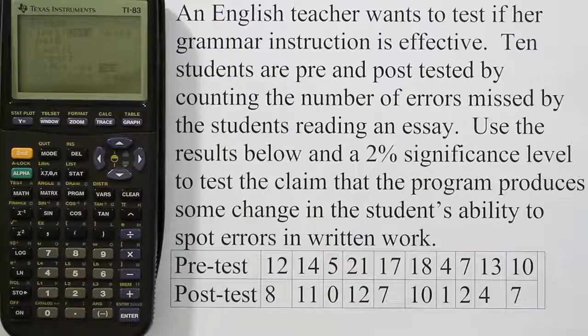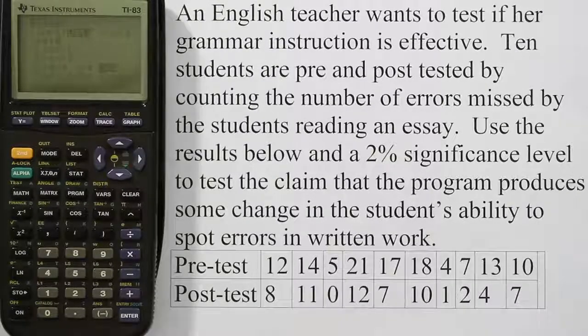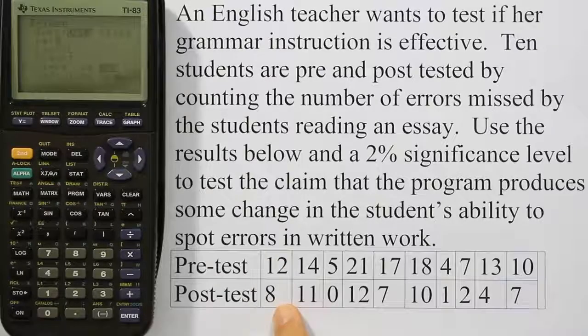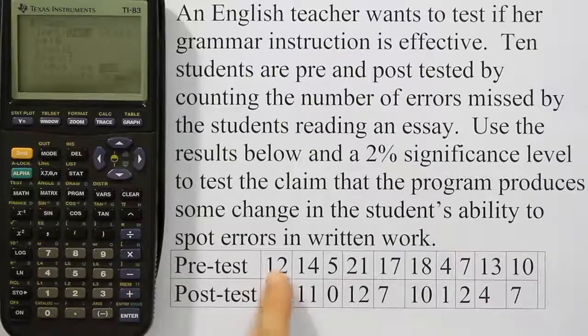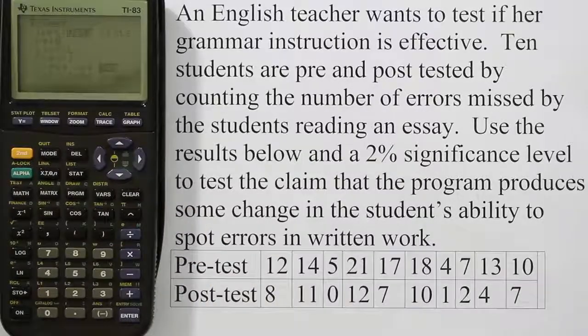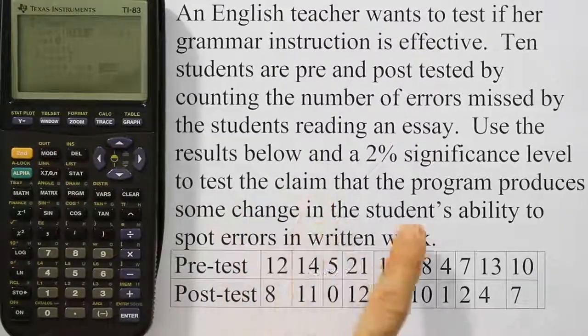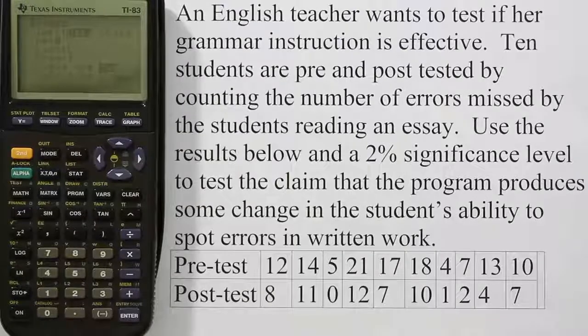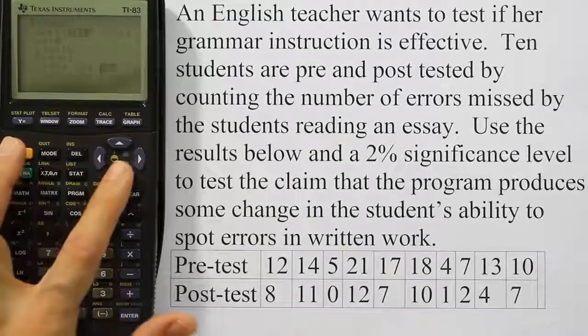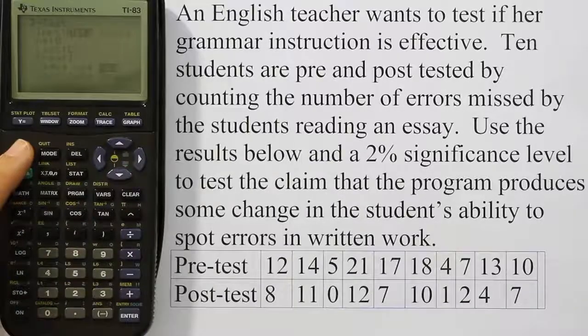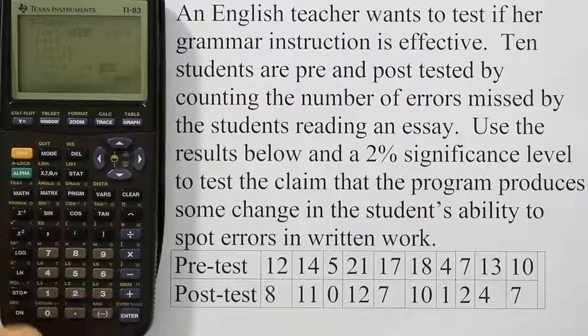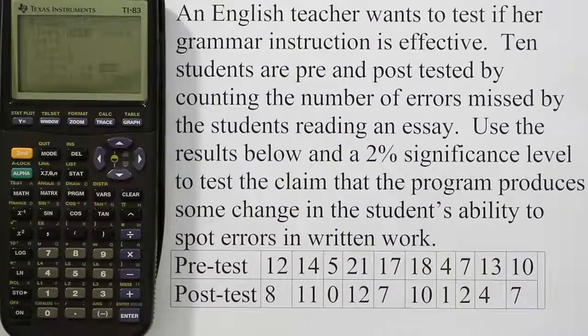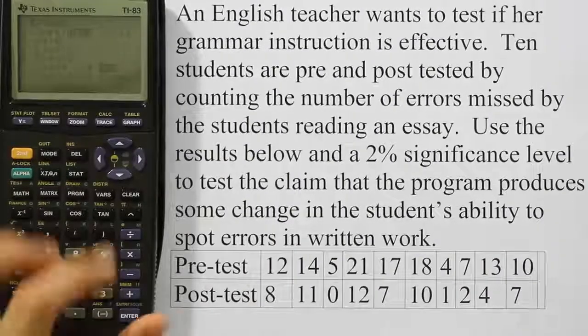You're going to scroll down to where it asks for this mu sub 0. In other words, it wants to know what the value is that we believe the difference should be. In these tests, the difference is almost always 0. Unless they specify a specific improvement, if this teacher thinks that we're going to have some change and the change is going to be a change of 10 points, then we would type in 10 there. But it doesn't say anything like that. It just says test the claim that the program produces some change, just some change in a student's ability to spot errors. So we're going to leave that as 0. We're going to leave this as L3. If it's not L3, you hit second and the number 3. Then you arrow down to where it says frequency. That frequency should be left as 1. In other words, you want each of the numbers in that list to only be counted once.